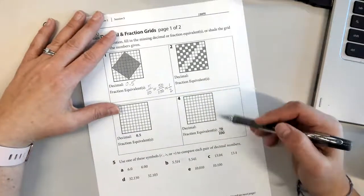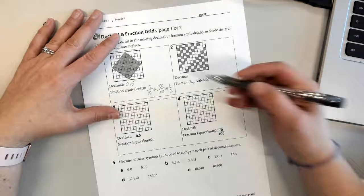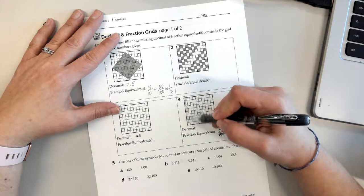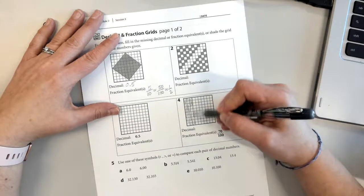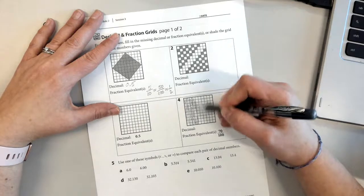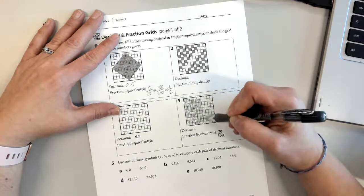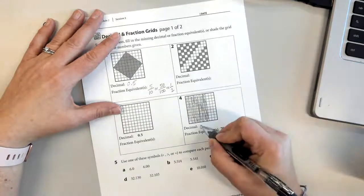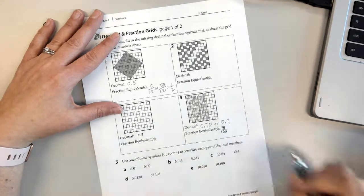Let's look at number four. It says seventy hundredths. I know that seventy hundredths is also seven tenths, so I'm going to color in or shade in seven tenths. That's four, five, six, seven. So my decimal equivalent could be seventy hundredths or seven tenths.